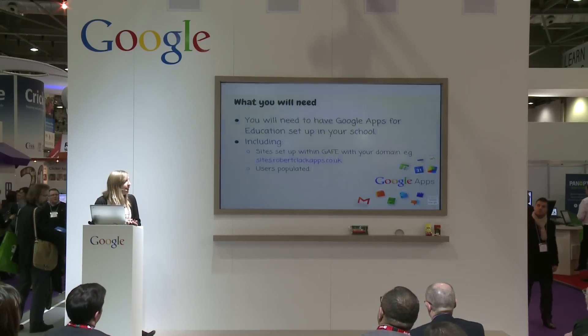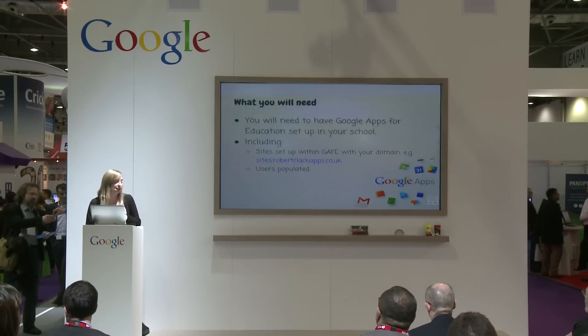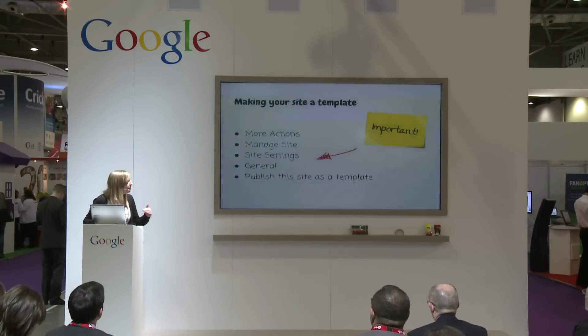When students logged on and created a site, they could just select that template — the Robert Clack e-portfolio template — which they then went on to edit. They can add pages to it, add their work, and it's kept within the domain. You will need Google Apps for Education set up; I set mine up with the domain Robert Clack Apps and populated it with all 900 Key Stage 3 users. I administrate that system myself as a secondary school teacher — it's not loads of extra work, it's just that easy. I don't need to run it through my technical support department.